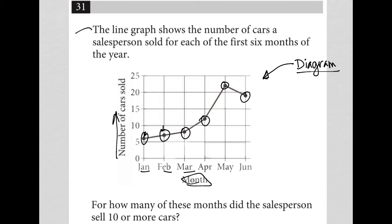It says here the line graph shows the number of cars a salesperson sold for each of the first six months of the year. The question is for how many of these months did the salesperson sell 10 or more cars? So, how many months out of these six months were there 10 or more cars sold?